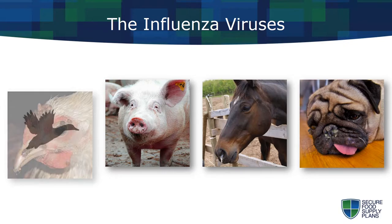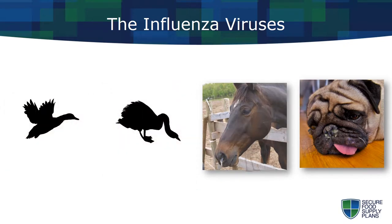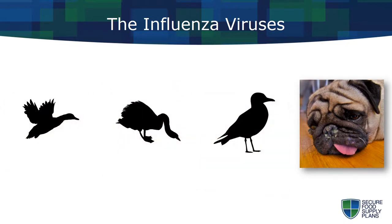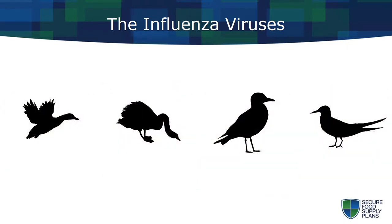Wild waterfowl — ducks, geese, swans, gulls, shorebirds, and terns — are the natural hosts for all known influenza type A viruses. These hosts, while infected, may show no signs of the disease.